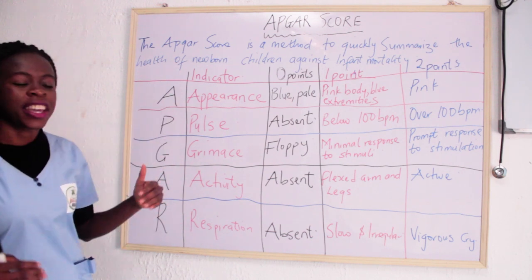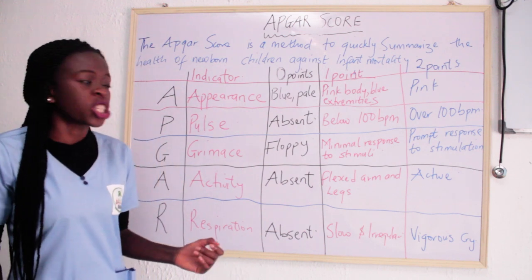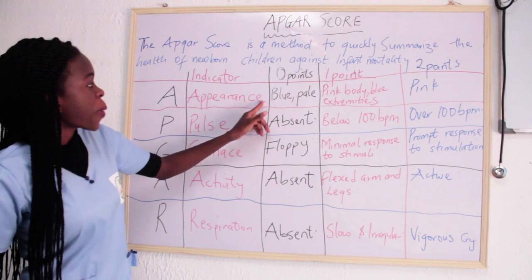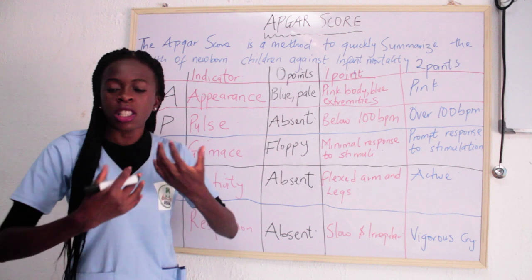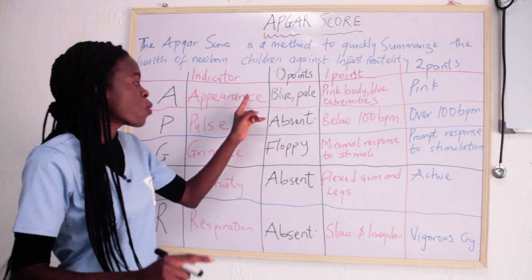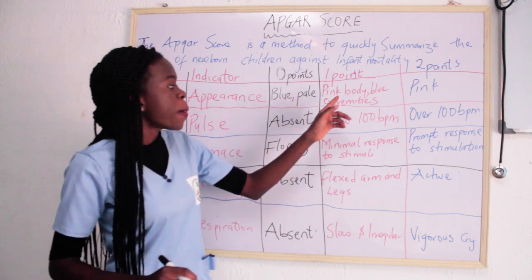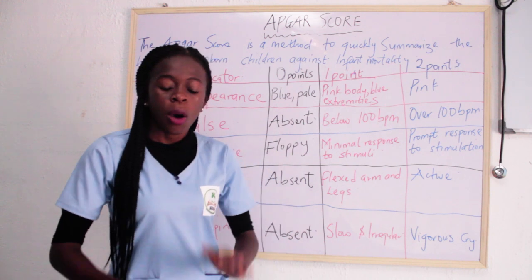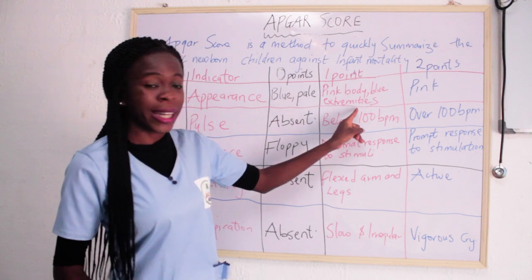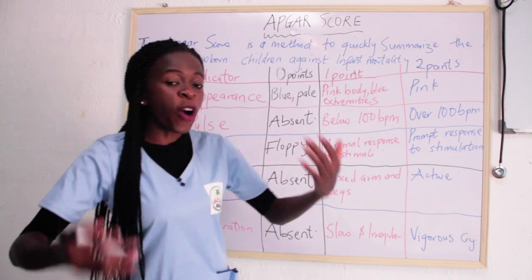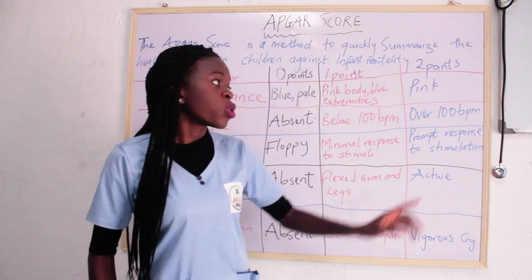The first component is the Appearance of the newborn child. How is the appearance of the newborn child? If the appearance is blue and pale — you see the child having blue extremities, blue body, the baby is pale — you give the baby zero, no points at all. Then if the baby's body is pink but the extremities such as the hands and legs are blue, you give one point. But if all the body — the extremities, the whole body — is pink, you give the baby two points.